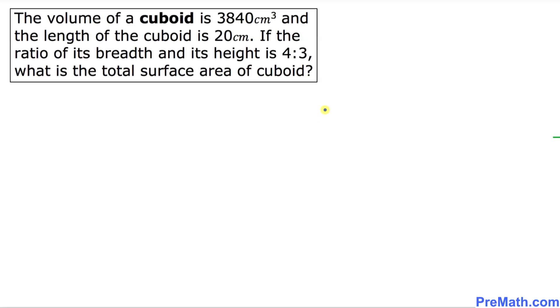Welcome to PreMath. In this tutorial we'll be talking about cuboid. In this problem, the volume of a cuboid is 3840 cm³ and the length of the cuboid is 20 cm. If the ratio of its breadth and its height is 4:3, what is the total surface area of the cuboid?